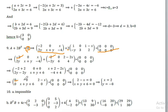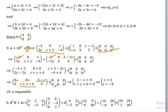Then 0, 0, 2 minus x. So x equals 2, and x plus y plus 6 equals to 0.